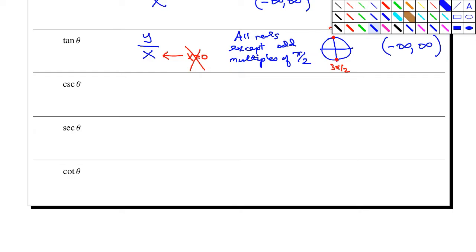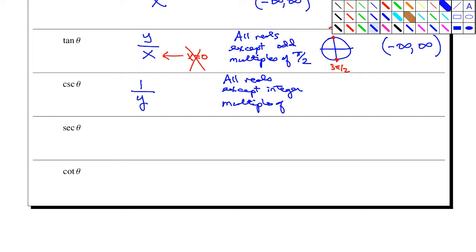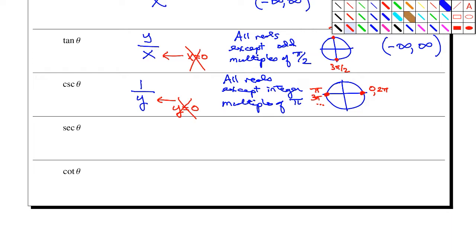Let's look at cosecant. The unit circle representation for cosecant is 1 over y. The domain is all reals except integer multiples of π. Looking at the unit circle representation, y is in the denominator — if y equals zero, that's bad. Where is y equal to zero? At these spots: 0 and π, then 2π, 3π, and so on. So it's any multiple of π.